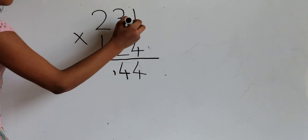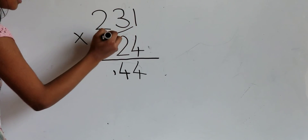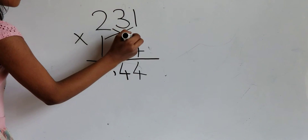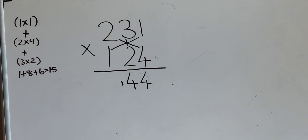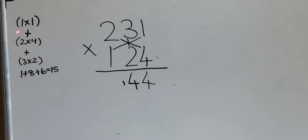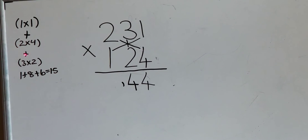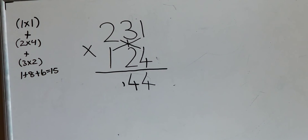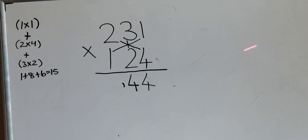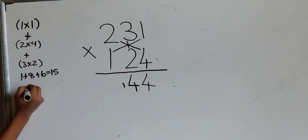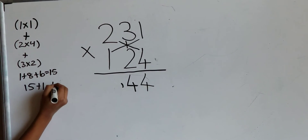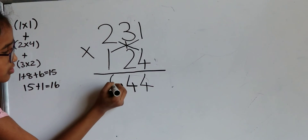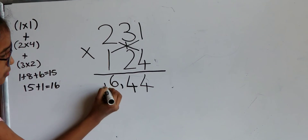Next, multiply 1 times 1 plus 2 times 4 plus 3 times 2, which equals 15. Remember the carry: 15 plus 1 equals 16. Write the 6 over here and carry the 1.